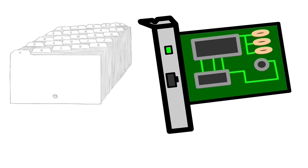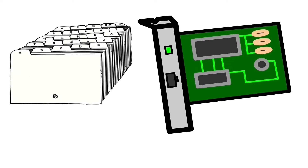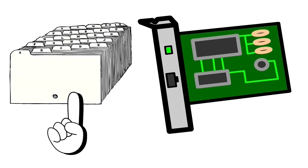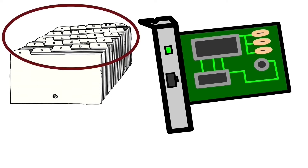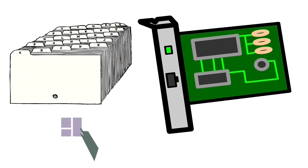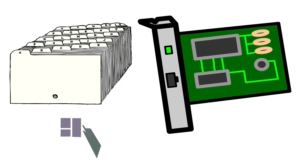You can assign multiple connections to an interface but can use only one connection at a time. To assign multiple connections, you need to use a unique name for each connection. You can also configure the interface to automatically select the appropriate connection.